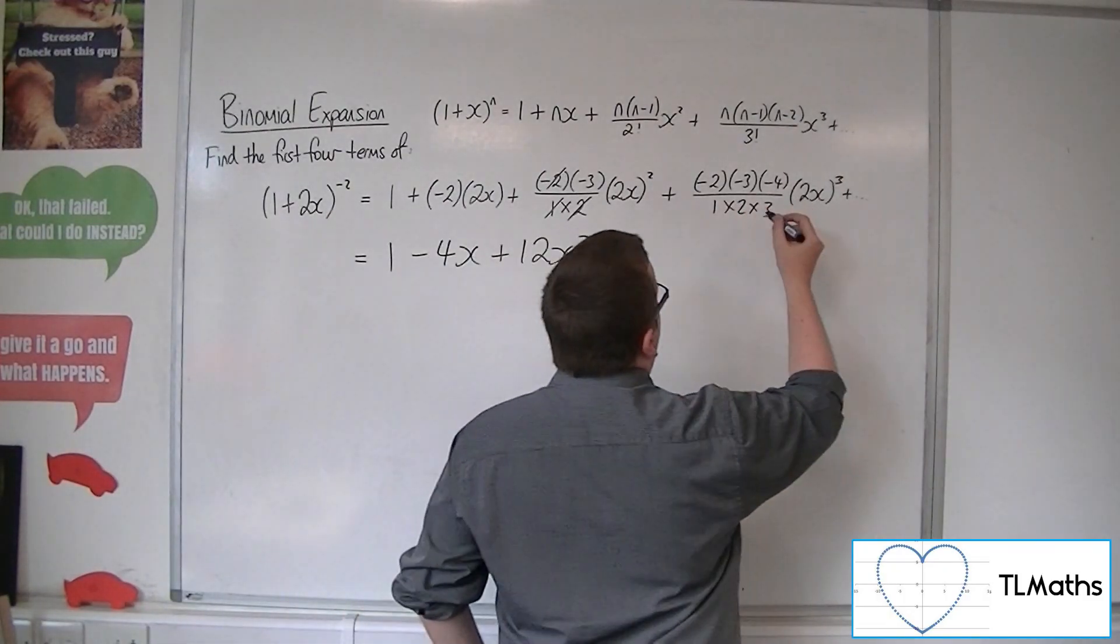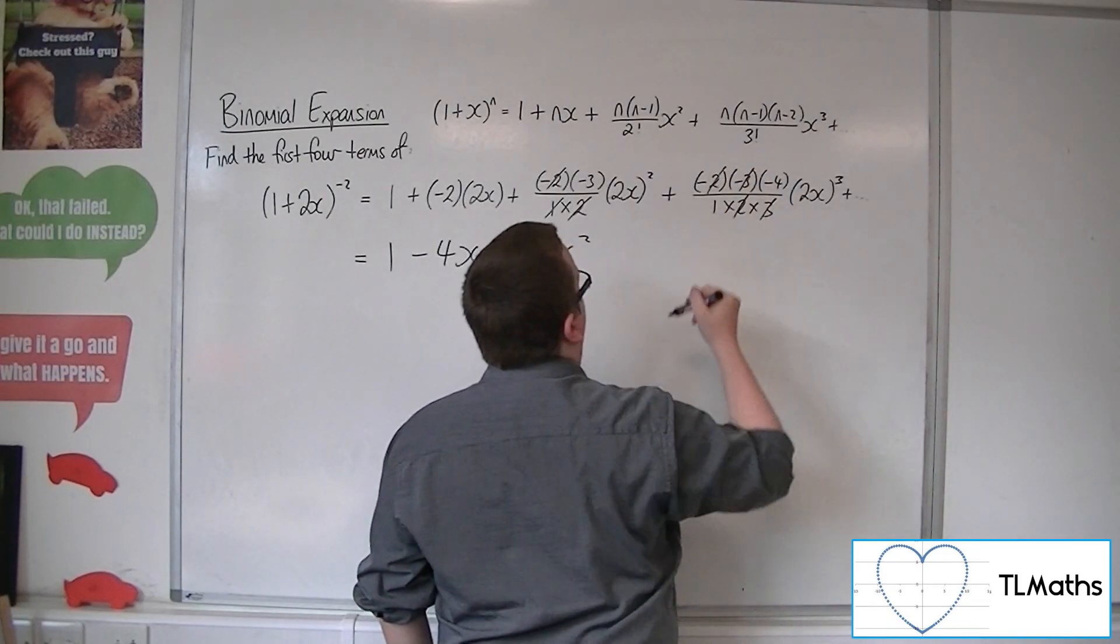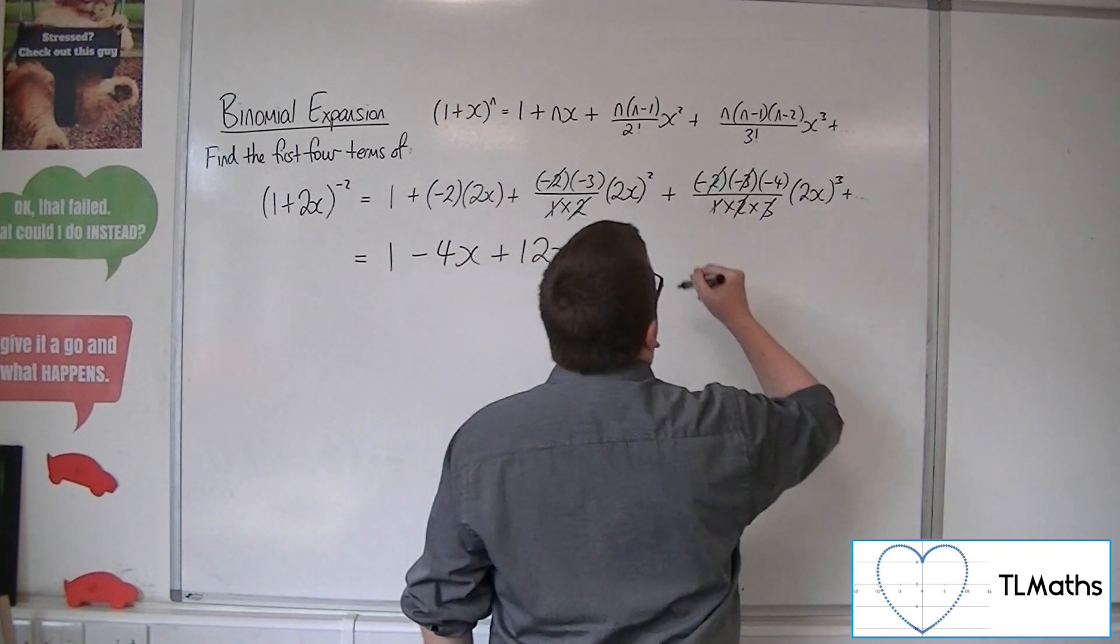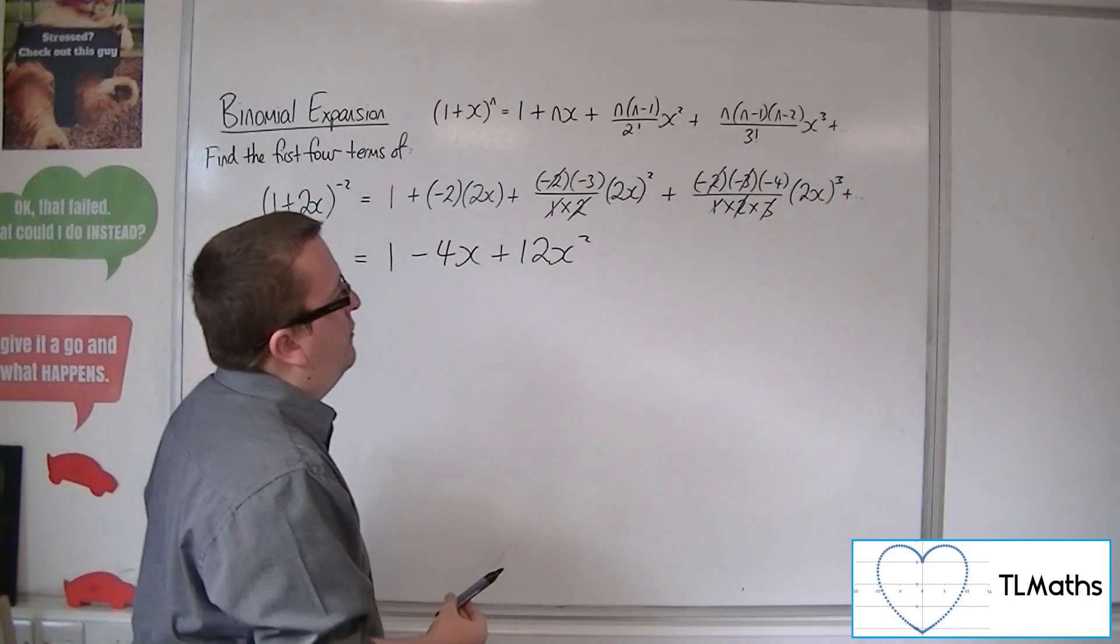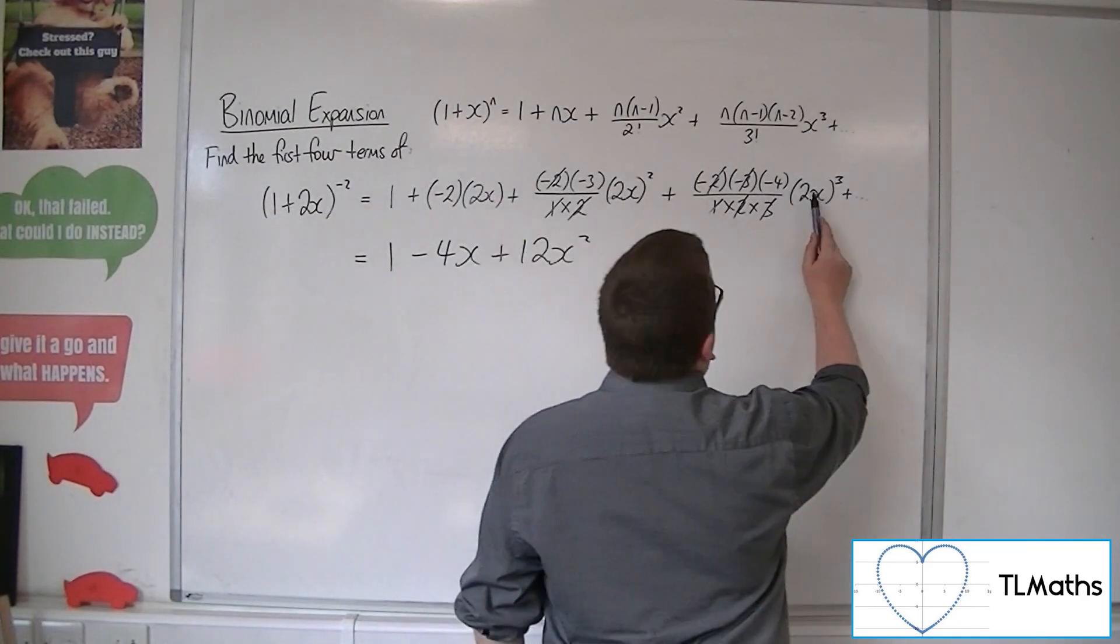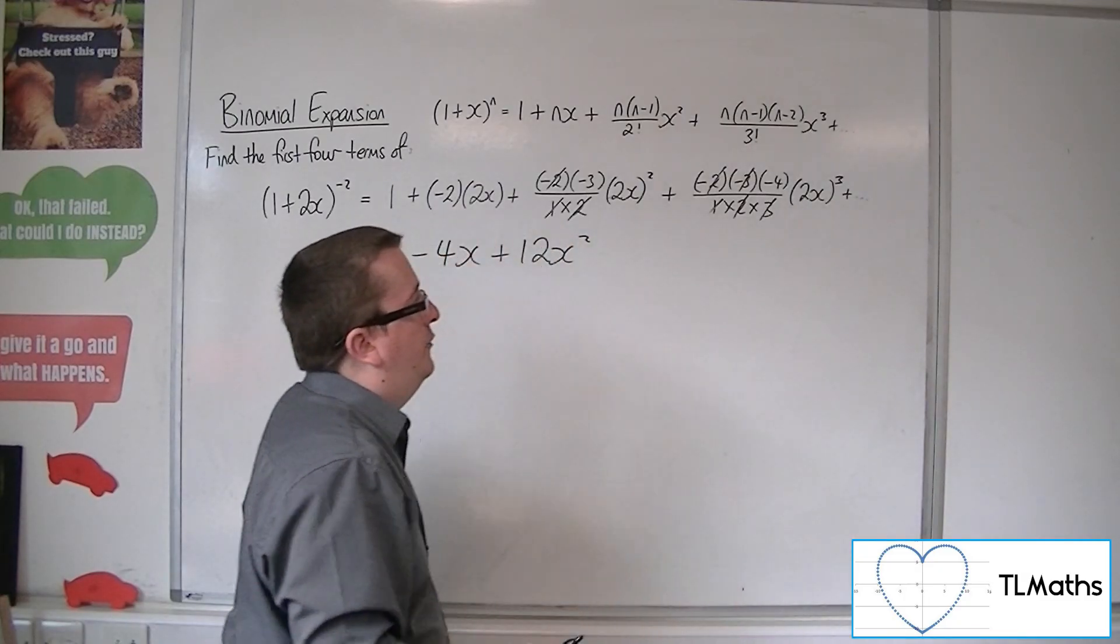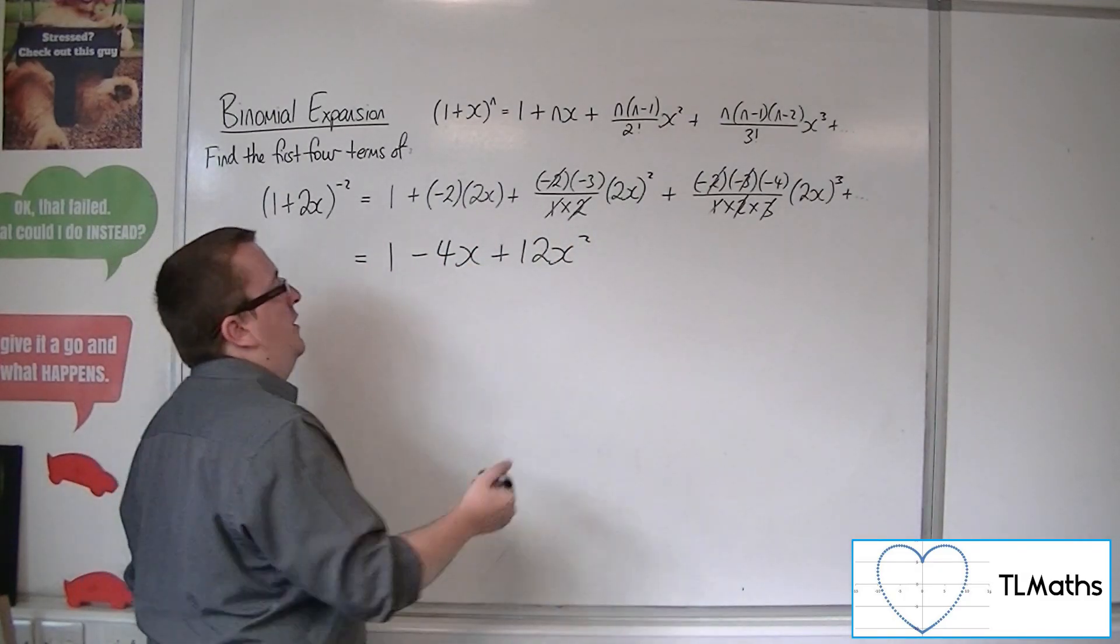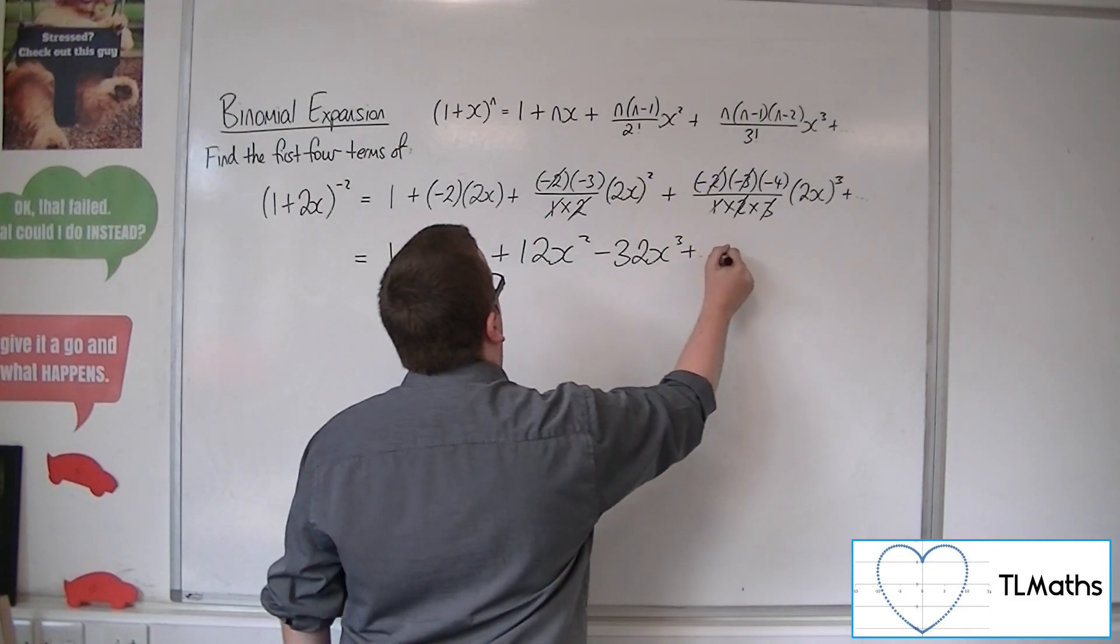Over here we're going to have a negative. We've got the 3, they can cancel, the 2 can cancel as well. 1 can disappear. So we've got 3 negatives, that'll make a negative. So we've got minus 4 times by 2 cubed, so 8. So minus 4 times 8 is minus 32. So minus 32x cubed, plus other terms.